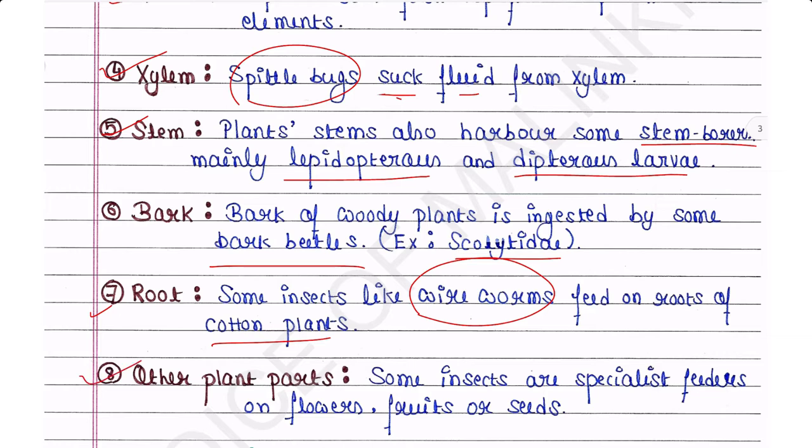Other plant parts: some insects are specialist feeders on flowers, fruits, or seeds — they only take their food from either flowers, fruits, or seeds.